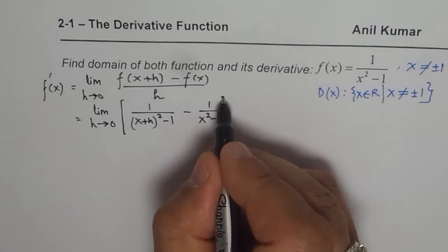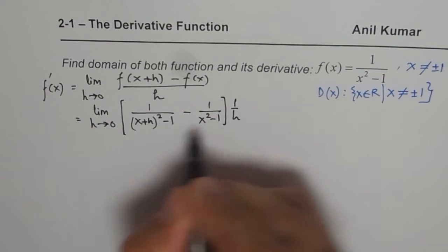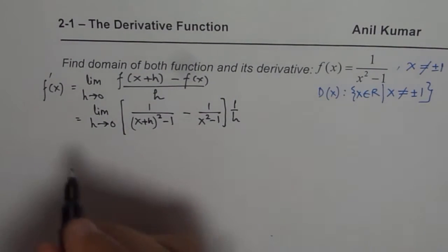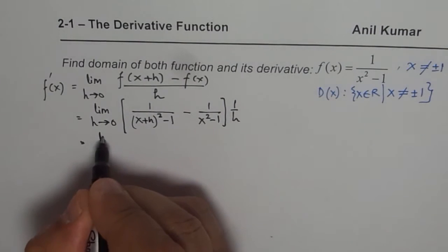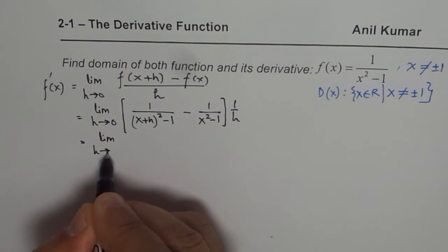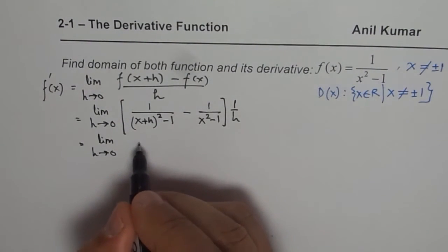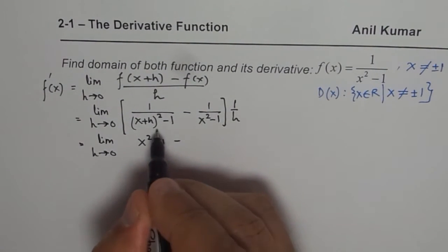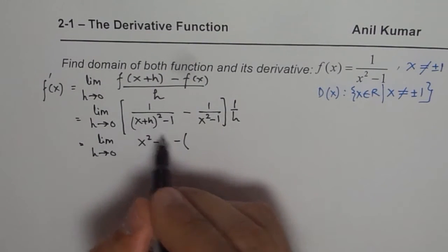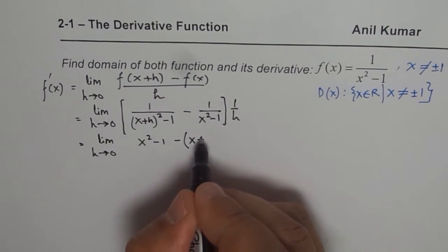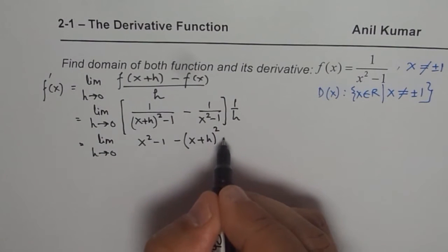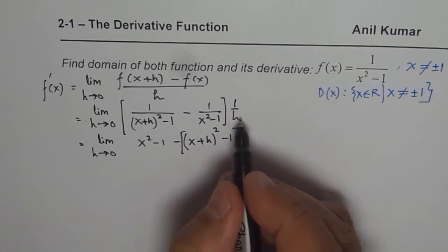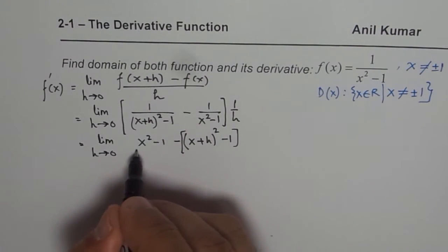We can also write the division by h as multiplication by 1/h. Now we cross-multiply: in the numerator we get (x² - 1) minus [(x+h)² - 1], and in the denominator we have h times (x² - 1) times [(x+h)² - 1].